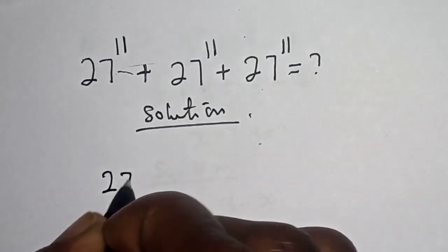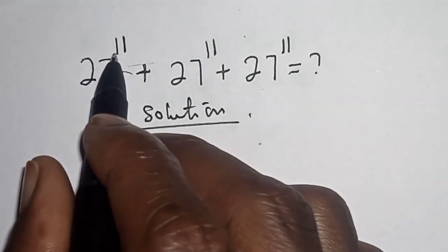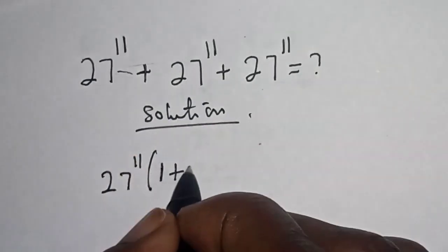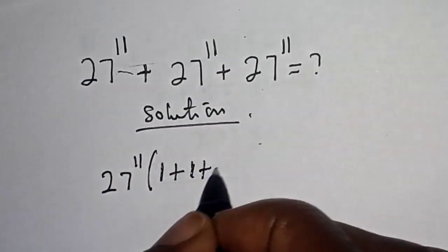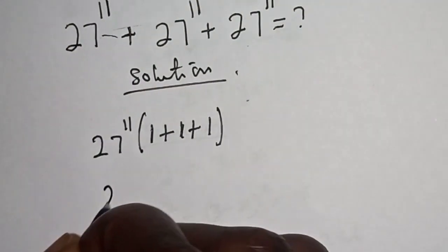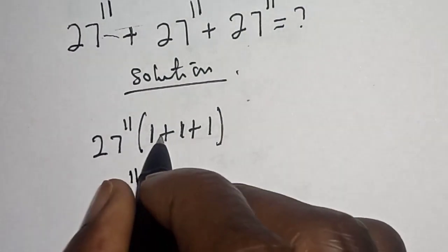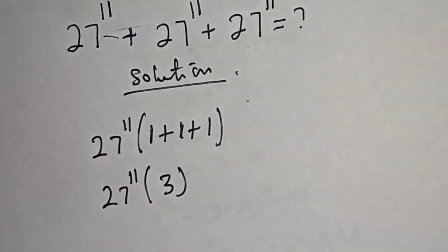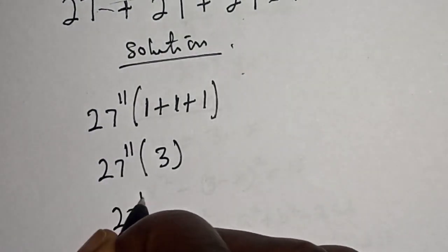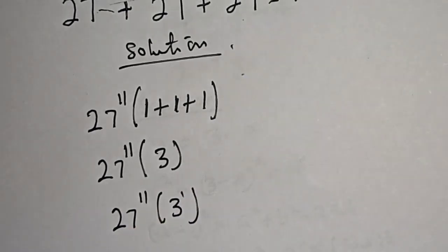Solution: 27 raised to power 11 is common, let's bring it out. 27 raised to power 11, bracket — this divided by this one, plus this divided by this one, plus this divided by this one — gives us 27 raised to power 11 bracket 1 plus 1 plus 1, which equals 27 raised to power 11 multiplied by 3 raised to power 1.